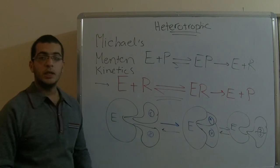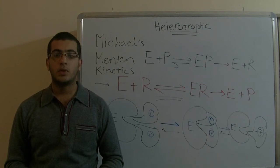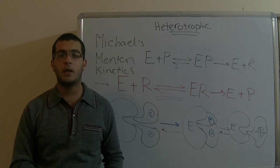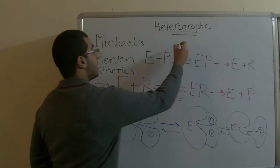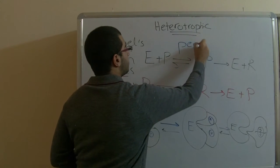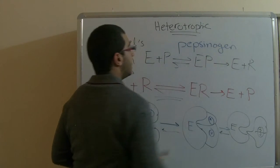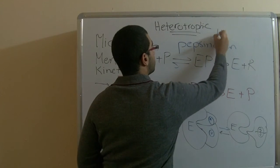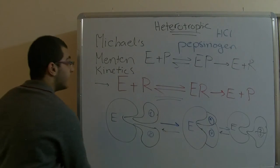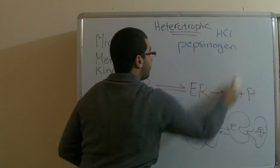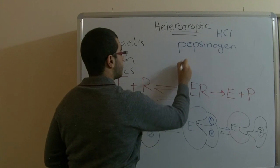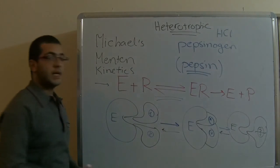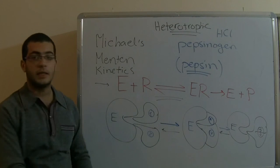The last point to mention is that some enzymes are produced inside the body in an inactive state. For example, there is an enzyme which is produced inside the stomach called pepsinogen. It's activated by the hydrochloric acid to give an enzyme called pepsin to digest the products inside the stomach, and we will talk about this later.